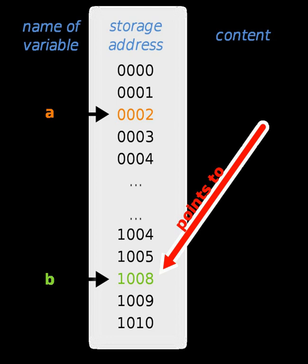As a pointer allows a program to attempt to access an object that may not be defined, pointers can be the origin of a variety of programming errors. However, the usefulness of pointers is so great that it can be difficult to perform programming tasks without them. Consequently, many languages have created constructs designed to provide some of the useful features of pointers without some of their pitfalls, also sometimes referred to as pointer hazards. In this context, pointers that directly address memory are referred to as raw pointers, by contrast with smart pointers or other variants.